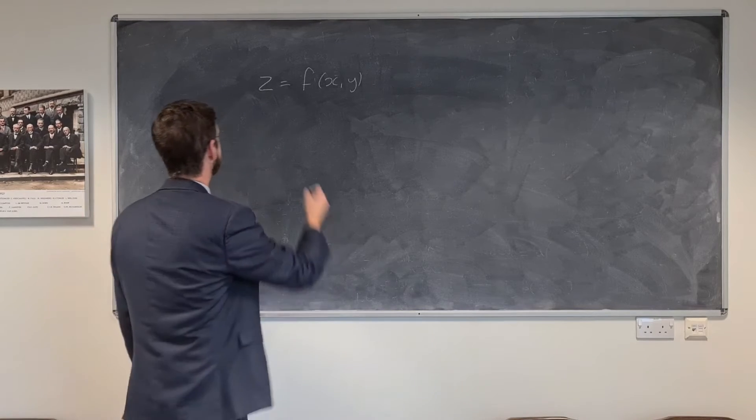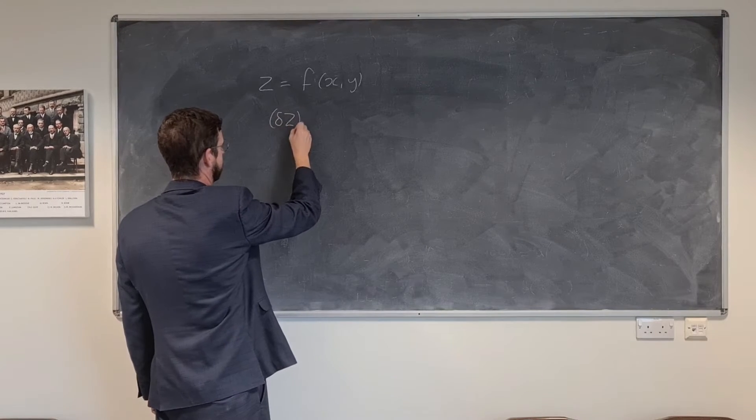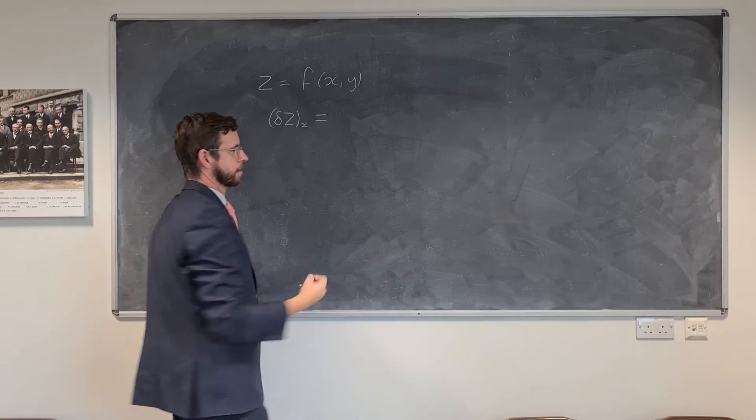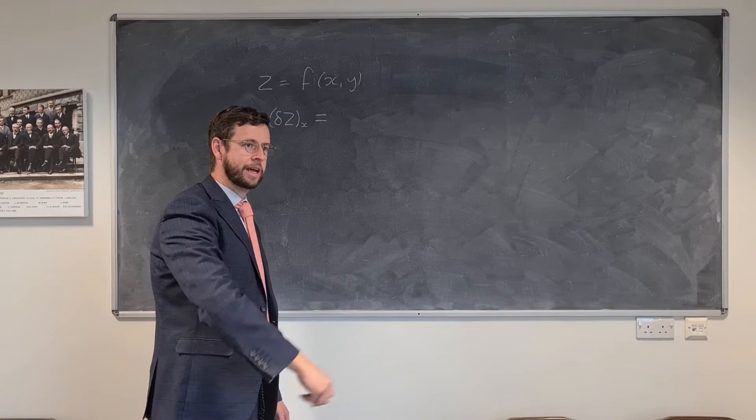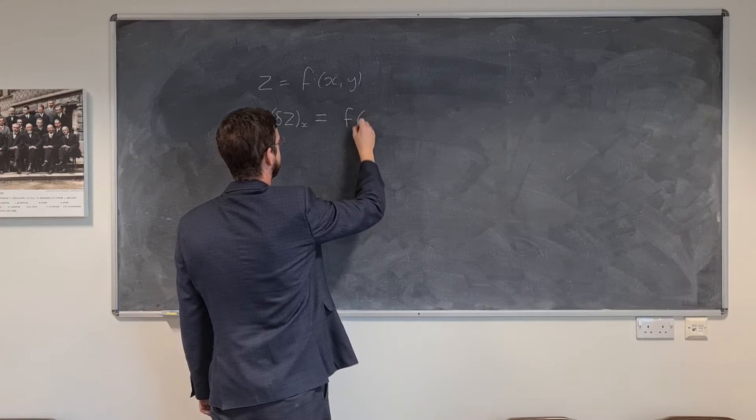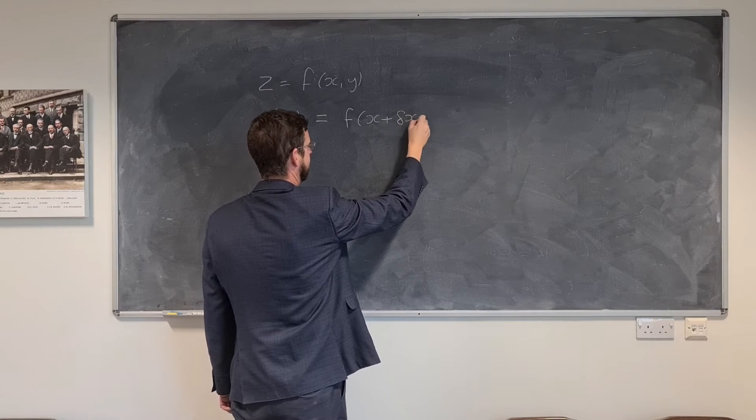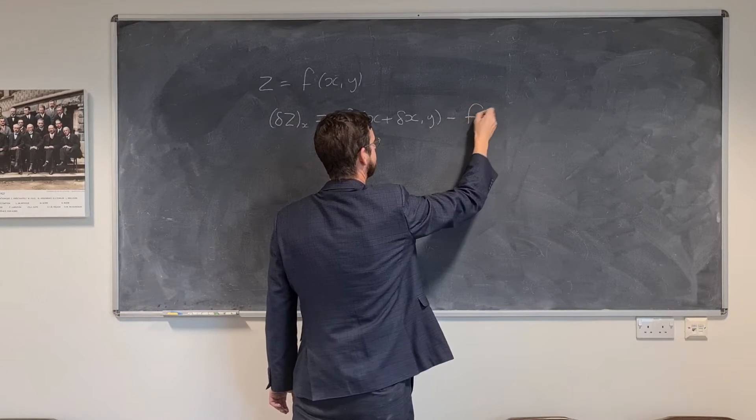that z was a function that related to the two independent variables x and y. Well, we would be able to look at how z changed with respect to x by simply looking at the difference between where we are on this function at one point and where we are at a new point.